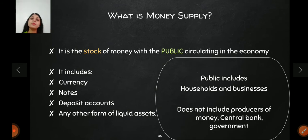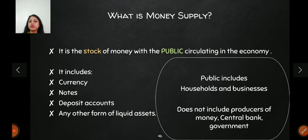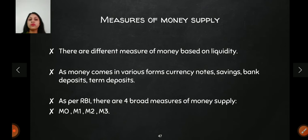The second important word is 'public.' Public includes households and businesses. Those who control money supply — the central bank and government — who have the power to print currency, are not included in this definition. So when we say money supply, we mean how much cash or stock of money households and businesses hold.